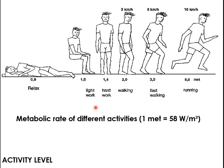There are different metabolic rates for different activities. When relaxed, it is 0.8 met; light work is 1.0 met; hard work is 1.4 met; walking, fast walking, and running reach 2.0 met. At 1 met — such as sitting and listening to a class — the body produces about 58 watts per meter squared of heat.